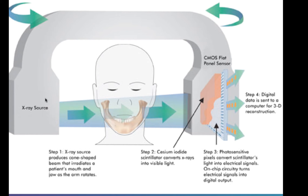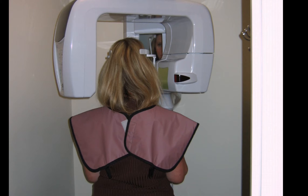This is what it looks like. We have the x-ray source that illuminates the area under study and we have the sensor on the other side that transmits data to the computer for reconstruction. This is what our machine looks like — it fits easily in our office. You just stand in it and the machine whirls around your head, like it would for a panoramic x-ray, which many of you have probably already had.